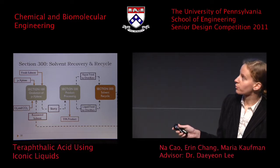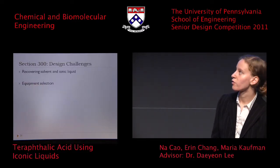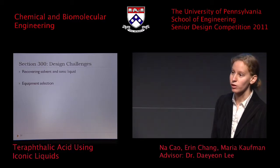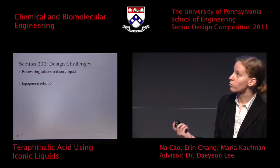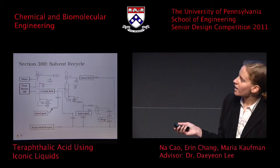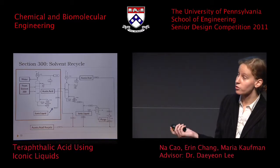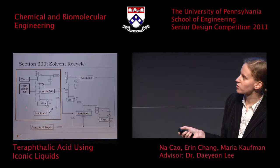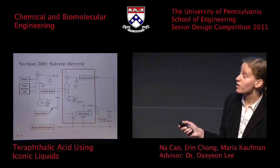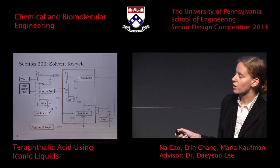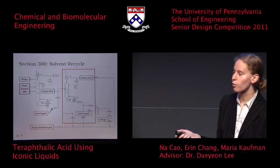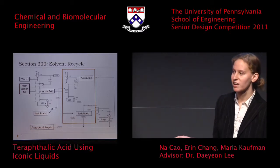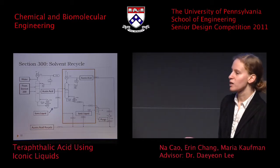In Section 300, we have the solvent recycle. Key design challenges included recovering the solvent and ionic liquid, which present different challenges as the solvent has a low boiling point and the acetic acid has a very high boiling point. We decided to use distillation columns: the first column separates acetic acid on the side while the expensive ionic liquid exits the bottom. The ionic liquid then travels to another column where more acetic acid is removed from the top and the ionic liquid comes off the bottom again. To avoid accumulation of high molecular weight impurities, we take a small purge. In this way, we recover about 90% of our ionic liquid and about 80% of our acetic acid per hour.